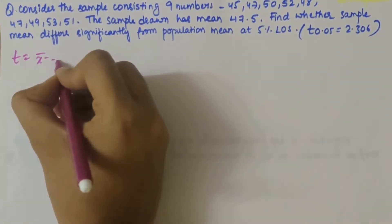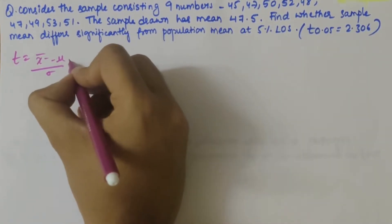First, let's write the formula: t is equal to x bar minus mu divided by sigma times root n.